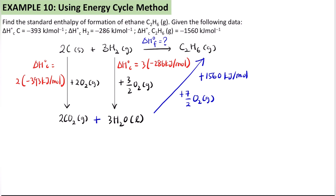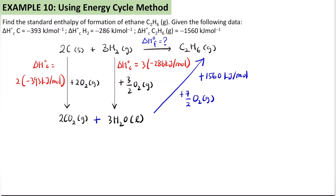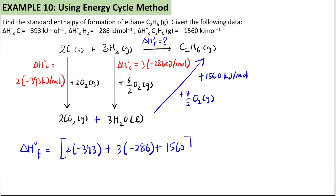With the arrow reversed to positive, we can now calculate. ΔH°f = 2 × (−393) + 3 × (−286) + 1560 kJ/mol. The final answer is −84 kJ/mol — the same answer as the algebraic method. Whichever method you prefer, you can use whichever you are comfortable with.